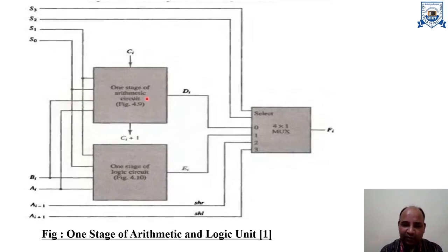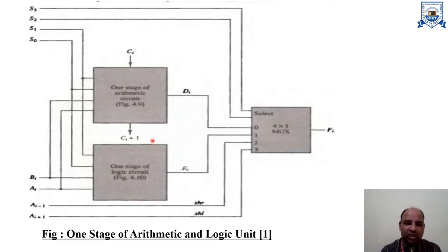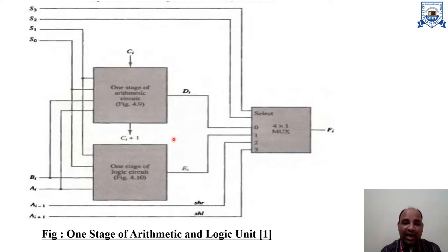Again, c_i is the carry input to this stage, and c_{i+1} is the carry output out of this particular i-th stage. Then c_{i+1} will work as an input to the next stage's arithmetic circuit.